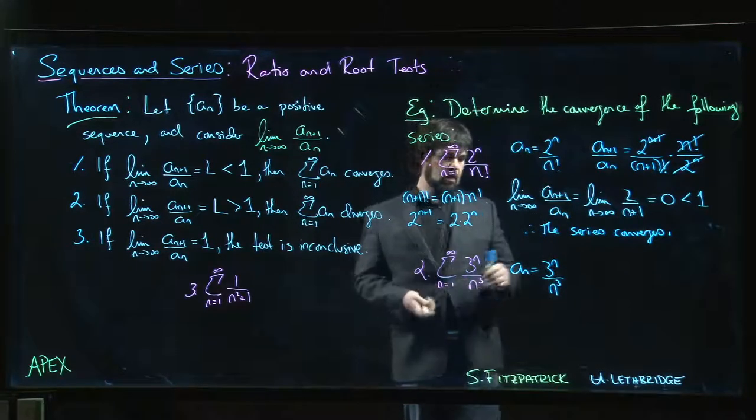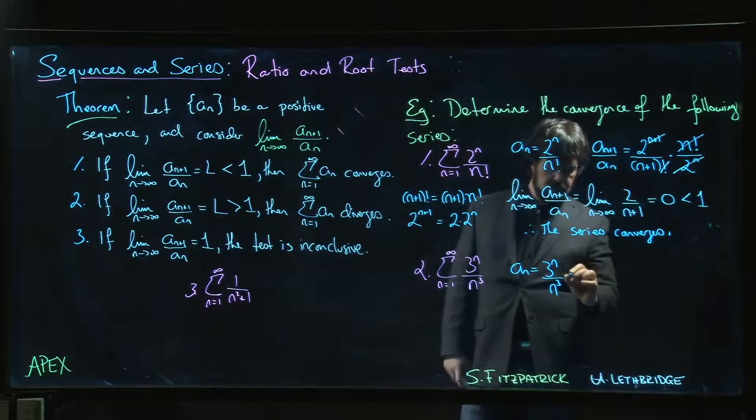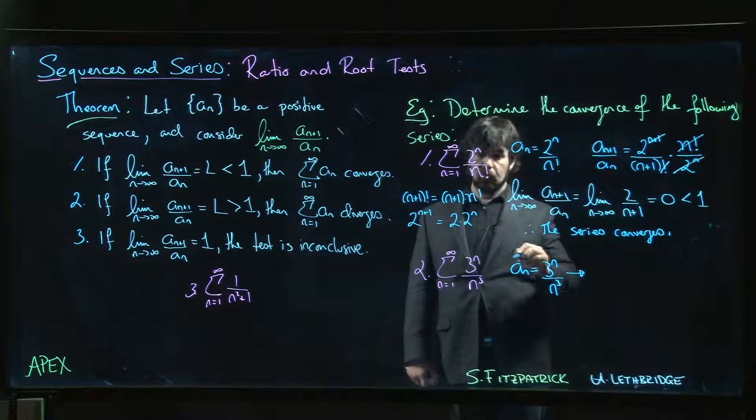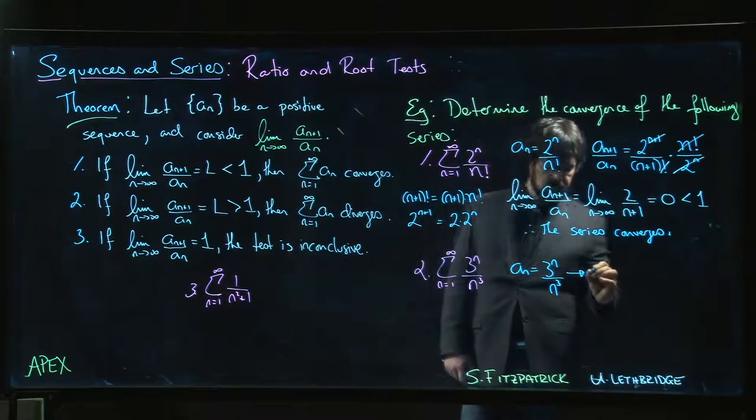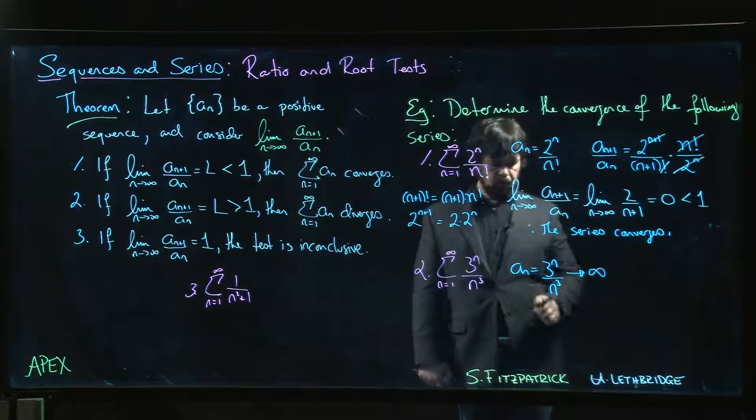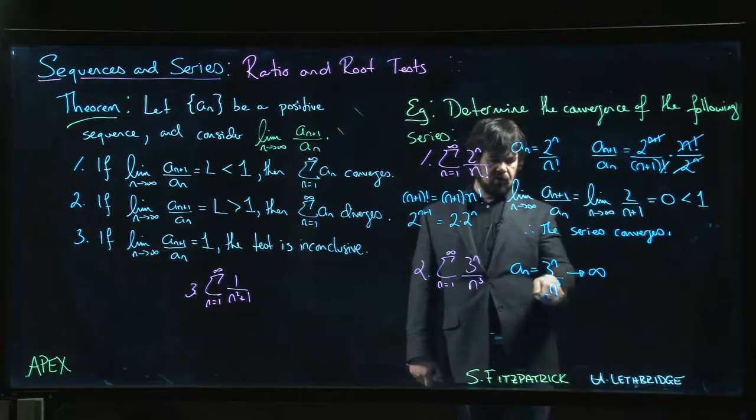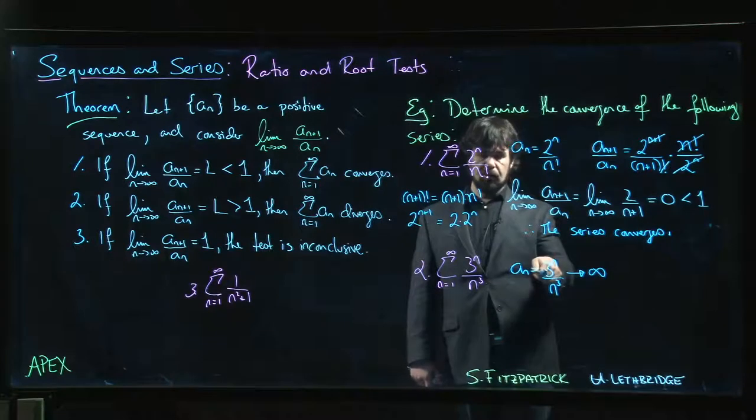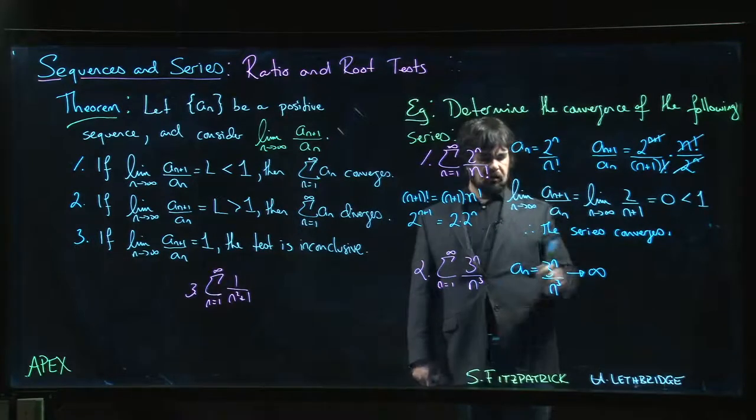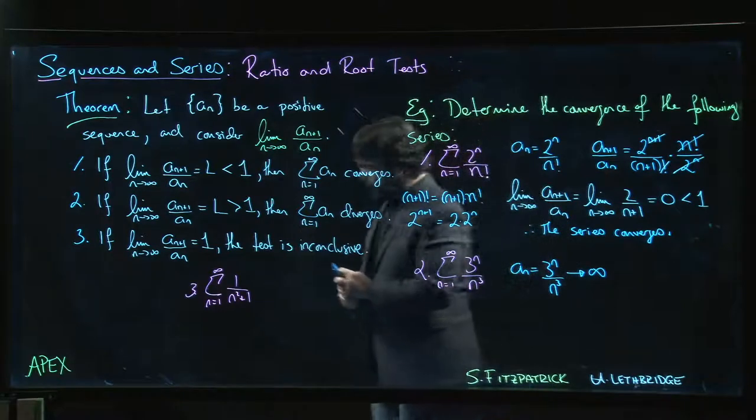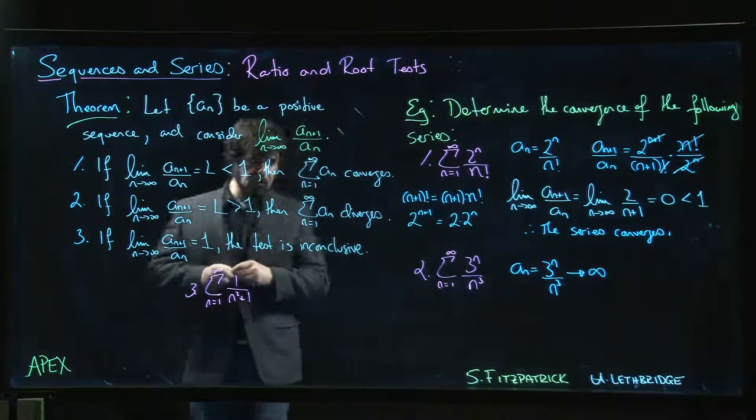You could say, well, look at a_n here is three to the n over n cubed. And you could say, hey, look, the limit of a_n as n goes to infinity, the limit of this thing, it's actually infinite because infinity over infinity, but use L'Hopital's rule three times, you're just left with six on the bottom, you'll still have three to the n on top, it's going to go to infinity.